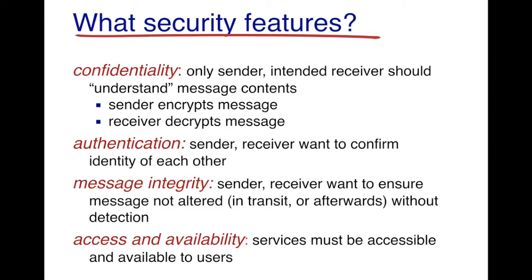Let us understand what security features Alice and Bob would want. First, they would want confidentiality — only the sender and the intended receiver should be able to understand the content of the messages. To achieve this, the sender encrypts the message, and the receiver decrypts it. No intruder, such as Trudy, should be able to understand the content of these messages.